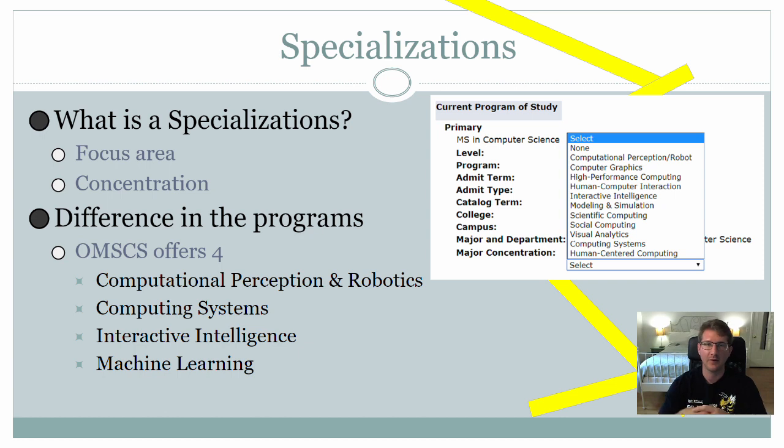So, as I said before, in this video we're going to be talking about how to prepare for each of the specializations. First of all, what is a specialization? A specialization is a focus area within the OMSCS program. The OMSCS program is supposed to give you a master's in computer science, and then you're allowed to focus in a particular area.